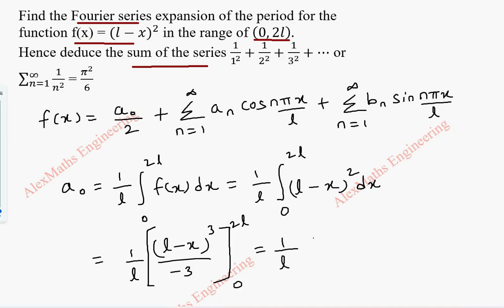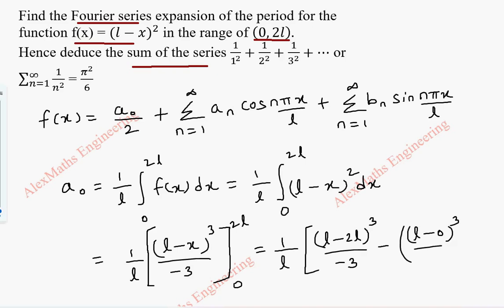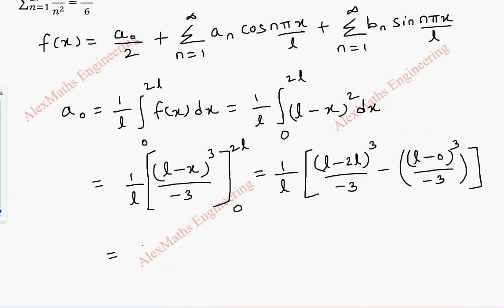This is (1/L). When I put 2L, it is (L − 2L)³ / (−3). Now L minus 2L is minus L, so (−L)³ / (−3). The negatives cancel and it becomes plus L³/3. And when we put the lower limit 0 it gives plus L³/3.